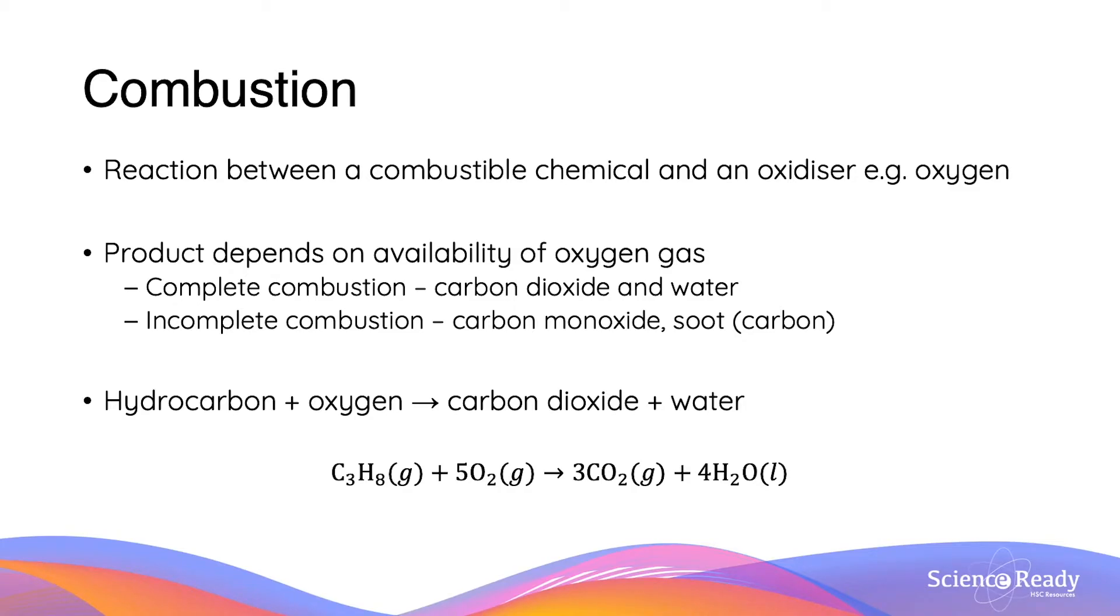So what is combustion? In module 3, we would have learned that combustion is a type of reaction that occurs between a combustible chemical and an oxidizer, usually oxygen. The product which results from combustion is dependent on the availability of oxygen gas supplied to said reaction. As a result of that, we end up having two different types of combustion reactions.